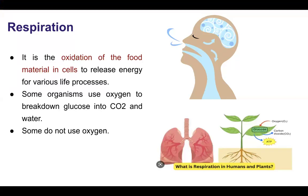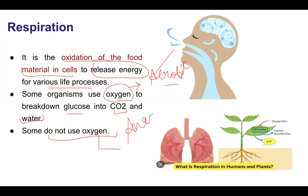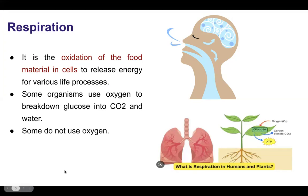Respiration is the oxidation of food material in cells to release energy, to perform various life processes. Some organisms use oxygen to break down glucose into carbon dioxide and water — that is aerobic respiration. Those who do not use oxygen for respiration carry out anaerobic respiration. We will study both in detail in this video.